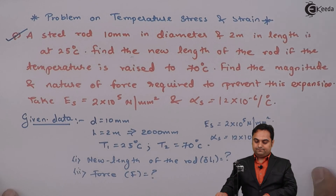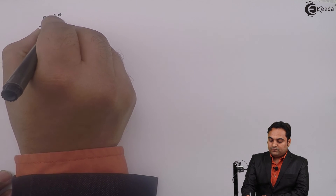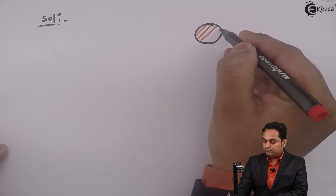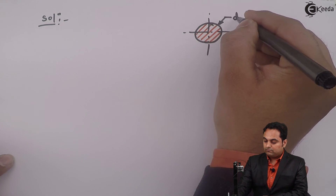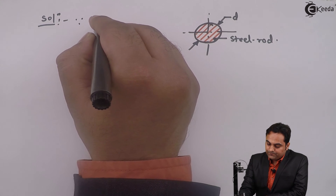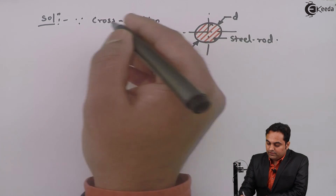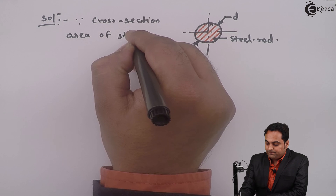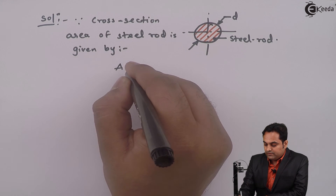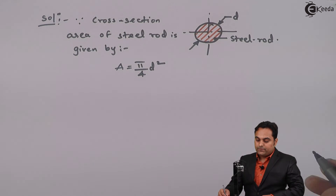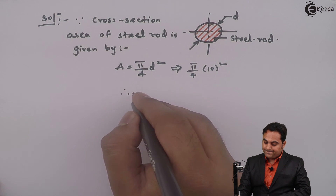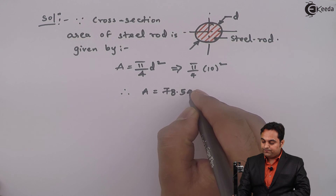In the solution, since it is a steel rod, I will draw the cross-section. The cross-sectional area of the steel rod is given by A = (π/4) × D². That becomes (π/4) × 10², which equals 78.54 mm².